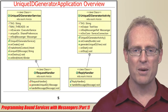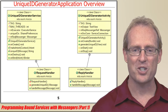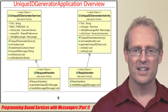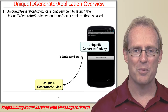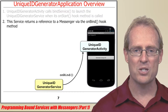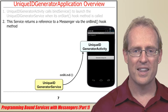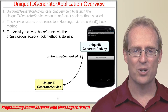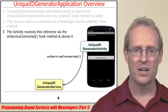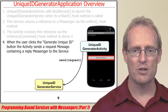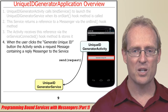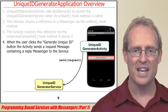Before delving into the details of this program, we'll first outline the overall structure and functionality of the unique ID generator application. This application contains a unique ID generator activity that calls bind service on a unique ID generator service when Android calls its onStart lifecycle hook method. This service returns a reference to a messenger via its onBindFactory method. The activity receives this reference via the onServiceConnected hook method and stores it in a local data member. When the user clicks the generateUniqueID button, the activity uses the messenger reference to send a request message to the service, which contains a reference to a reply messenger defined in the activity that the service uses to return the system-wide unique ID back to the activity.